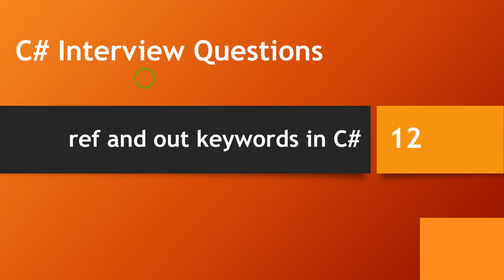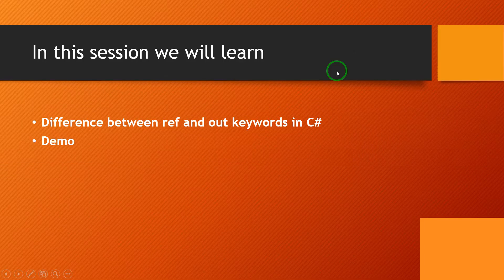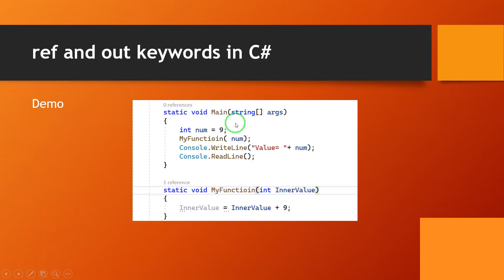Hi everyone, this is Arvind. Today's session topic is the difference between the ref and out keywords in C#. In this example we will learn what the differences are between ref and out — let's check with an example.